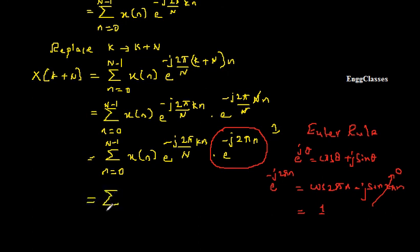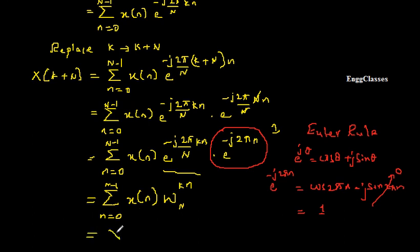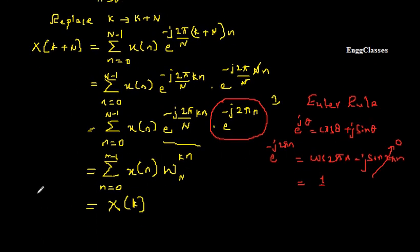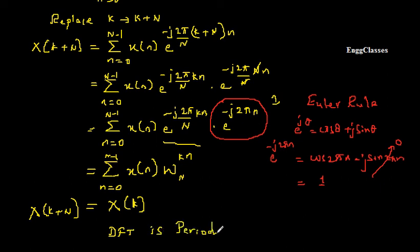So finally we get: summation N equal to 0 to N minus 1, X of N, W_N to the power K into N, which is nothing but the expression for X of K. But in the left-hand side I have X of K plus capital N. Hence I have proved that X of K plus capital N is equal to X of K. Therefore, the DFT — that is X of K — is periodic. Remember this property is very important: the DFT of any signal X of K is always periodic.